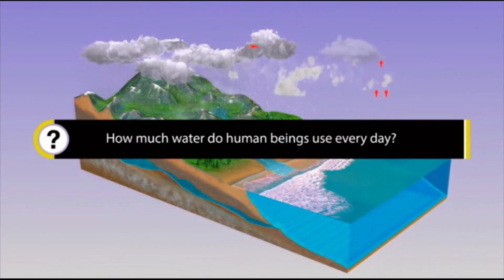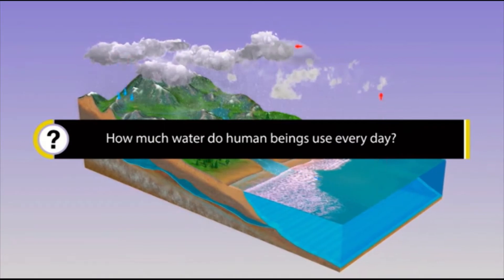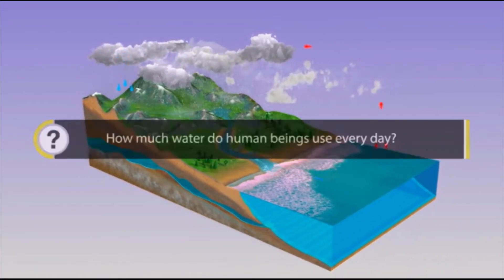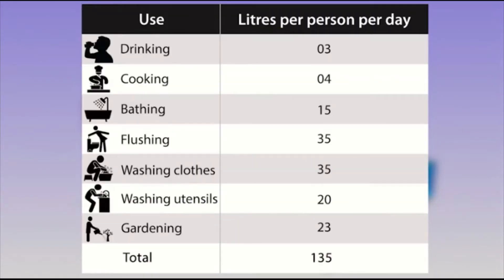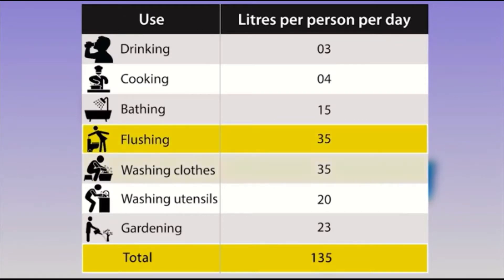Do you have any idea how much water human beings consume every day? It is estimated that an average urban Indian uses about 135 liters of water every day. Of this figure, the maximum amount of water is used for flushing toilets and washing clothes.